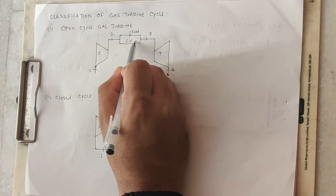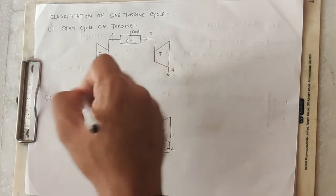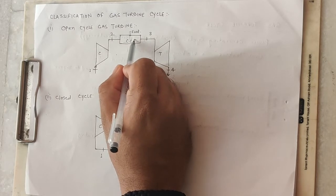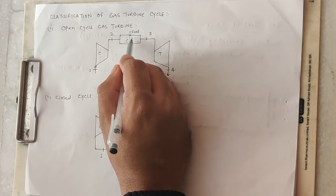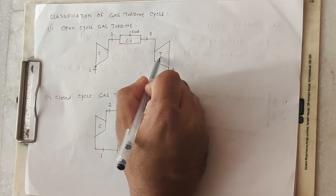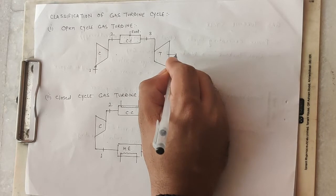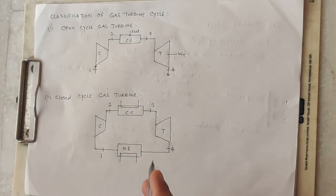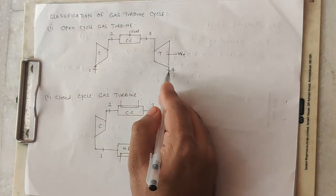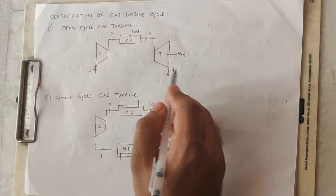In the open cycle, high temperature and high pressure air enters the combustion chamber. Fuel is injected — this is direct heating. Because of the high temperature of the air, the fuel ignites and burning starts. Heating occurs, and the exhaust gases are at high temperature and high pressure. The turbine then expands these gases and work is produced — we get the turbine work output, WT.